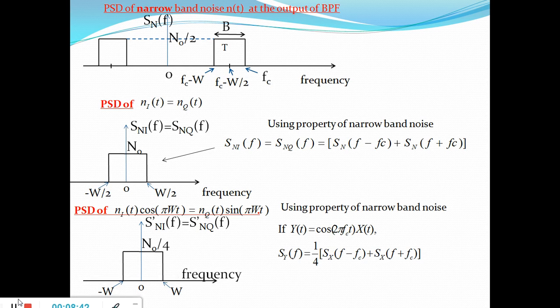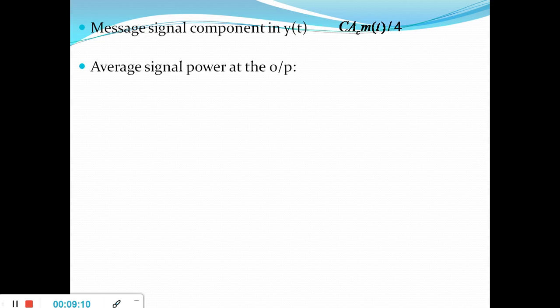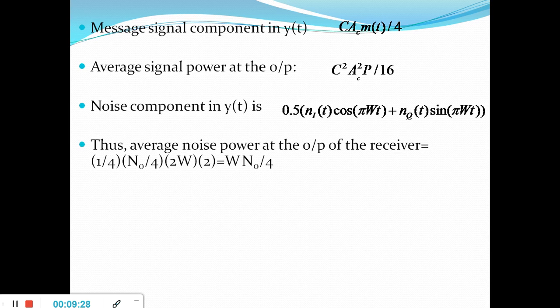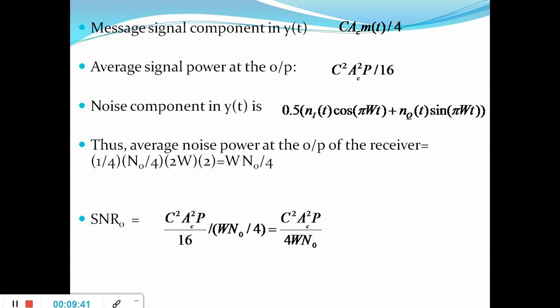Evaluating the average area under this curve, we get N0/4 into 2W. The message component in y(t) is C·Ac·m(t) divided by 4, and its average power is C²·Ac²·P divided by 16. The noise component power is W·N0 divided by 4. Therefore, the SNR at the output equals C²·Ac²·P divided by 4·W·N0, and the figure of merit is 1.